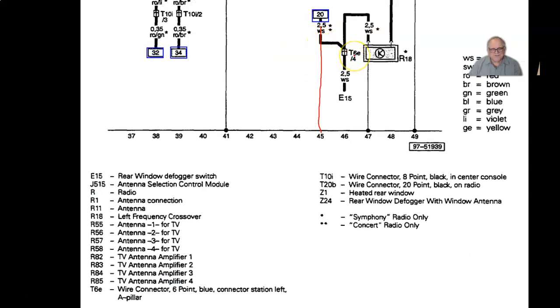There's where it continues. It comes to T6E, which is a wire connector, comes down to E15, which is the rear defogger switch, and it comes over to R18, which is another circle K, not really, left frequency crossover.